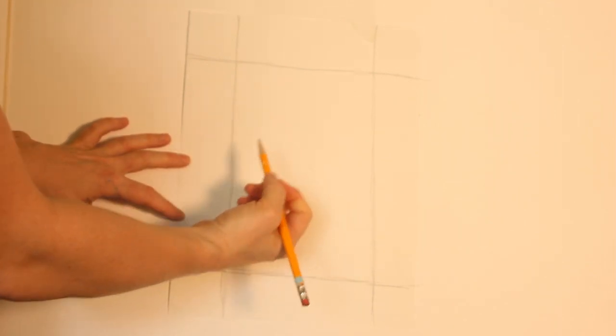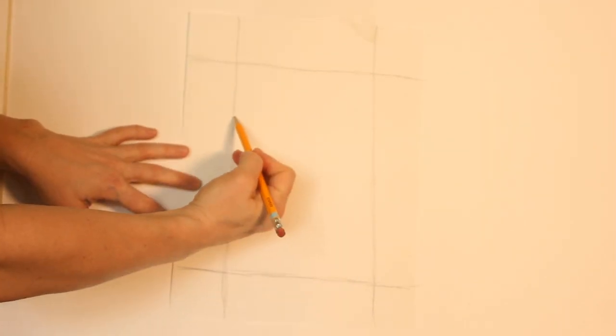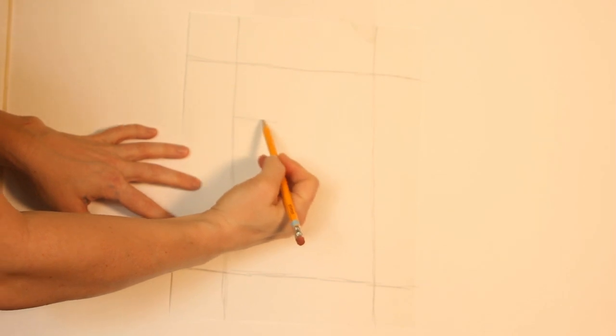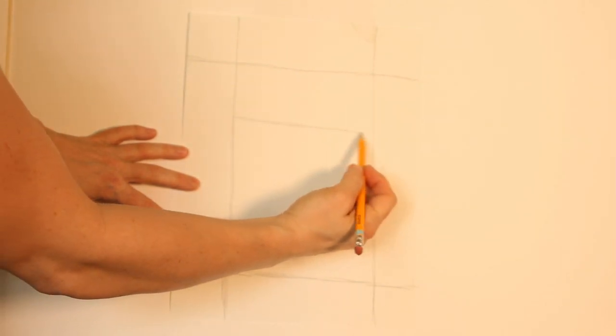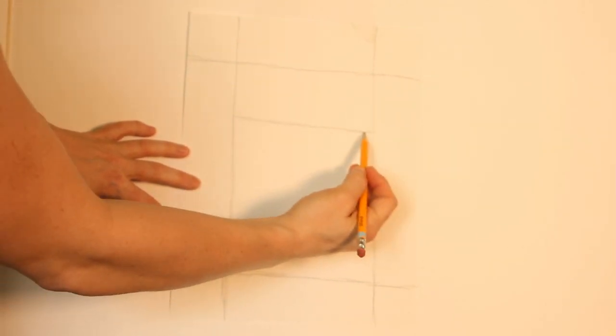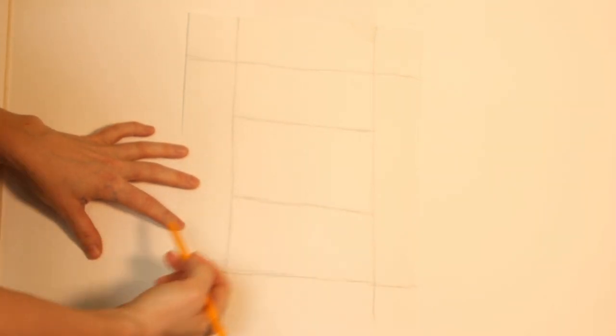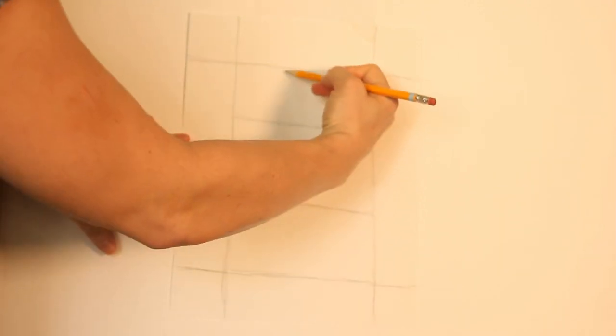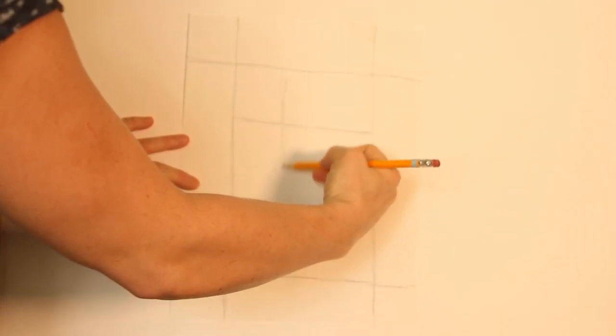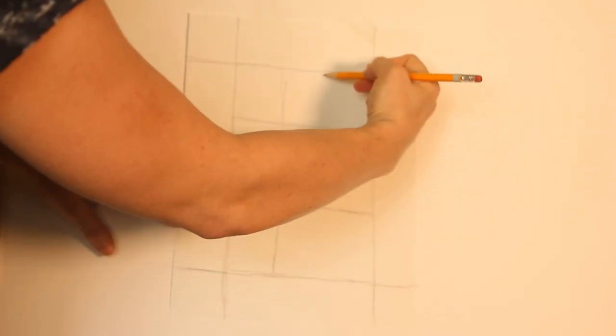Now on the inside, we have a rectangle. We're going to create a hashtag or a number sign with one line, horizontal line, and another horizontal line. One, two, and then three, and four.